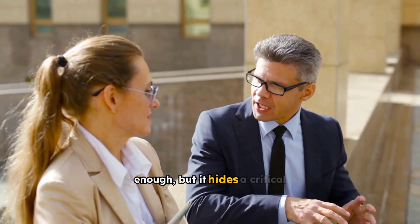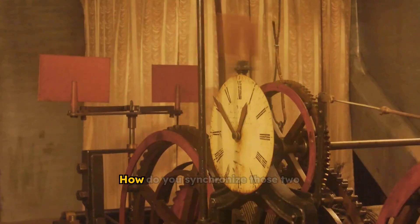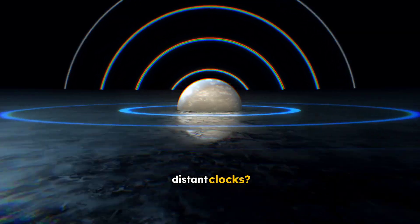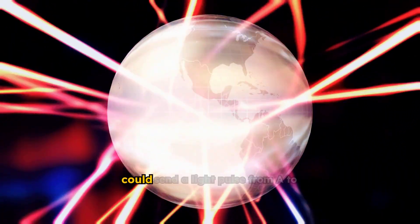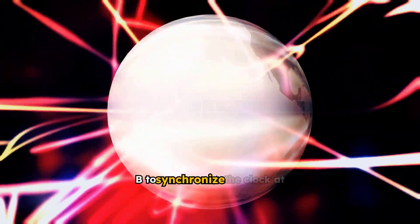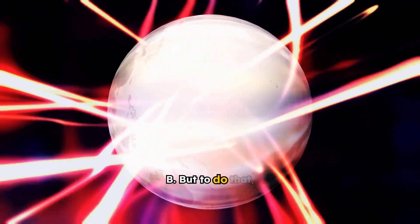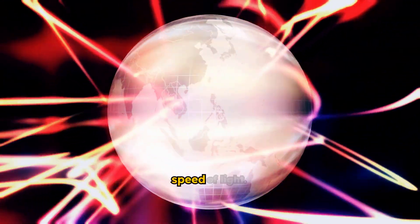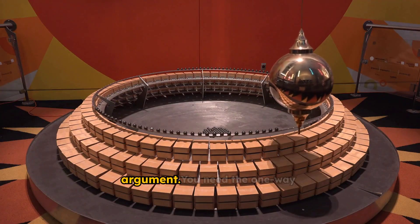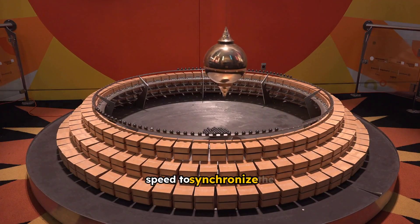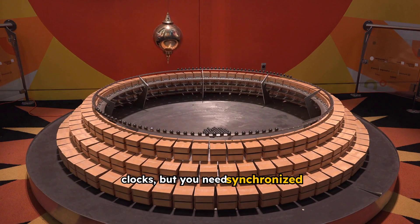This seems simple enough, but it hides a critical flaw. How do you synchronize those two distant clocks? The most obvious method is to use light signals. You could send a light pulse from A to B to synchronize the clock at B. But to do that, you would already need to know the one-way speed of light. This creates a logical loop, a circular argument. You need the one-way speed to synchronize the clocks, but you need synchronized clocks to measure the one-way speed. It's a classic chicken and egg problem in physics.